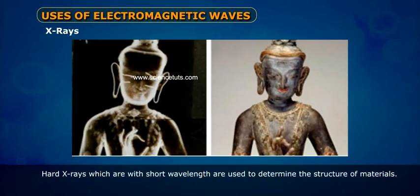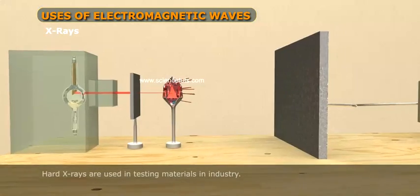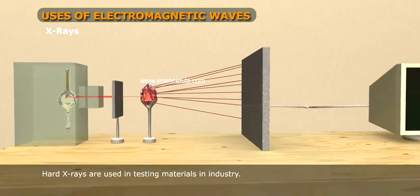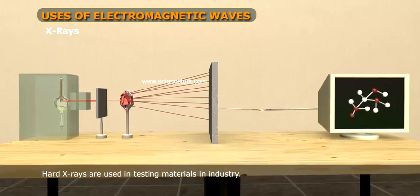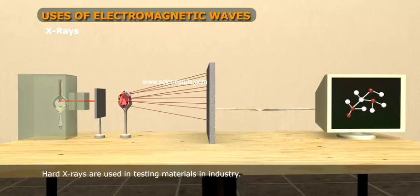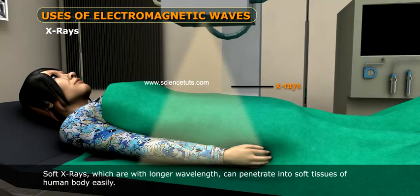Hard X-rays, which have short wavelength, are used to determine the structure of materials. Hard X-rays are also used in testing materials in industry.